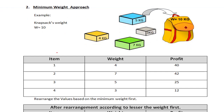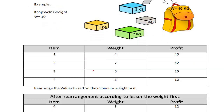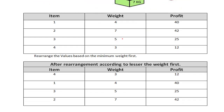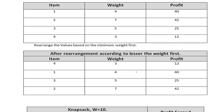In the minimum weight approach, we use the same example: a knapsack of weight 10 and four items to be inserted. The approach is to choose items based on the lesser weight first. Among all four items, weight 3 is the smallest, so it's chosen first, then weight 4, then weight 5, and finally weight 7.